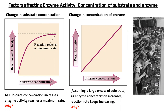Looking at other factors affecting enzyme activity, we can consider the concentration of substrate as well as the concentration of enzymes. Here we have a graph showing the change in substrate concentration and its effect on the reaction rate. Assuming everything else remains constant — we're not changing the concentration of the enzyme or the pH or temperature — as we have more substrate in the environment of the cell, we see that the rate of chemical reaction will increase at first. But eventually, even adding more substrate, the rate of chemical reaction will reach a maximum rate at which it can no longer increase.